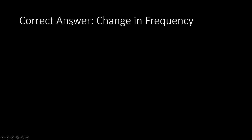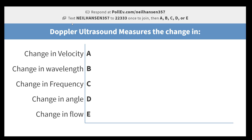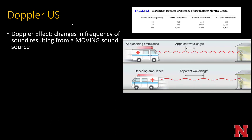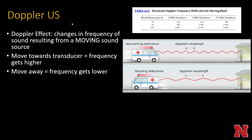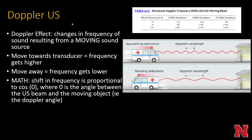The correct answer is a change in frequency — Doppler ultrasound measures the change in frequency. The Doppler effect describes changes in frequency of sound resulting from a moving sound source. Think of an approaching ambulance: the frequency of sound increases as it comes toward you, with crests getting closer together, then the apparent wavelength increases as the ambulance recedes. The frequency shift is proportional to the cosine of theta, which is the angle between the ultrasound beam and the moving object — known as the Doppler angle.